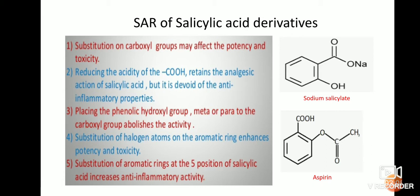The fourth point: substitution of halogen atoms — such as chlorine, fluorine, iodine, or bromine — on the aromatic ring may enhance potency as well as toxicity. The fifth point: substitution on the aromatic ring at the fifth position of salicylic acid may increase the anti-inflammatory activity.